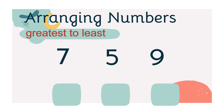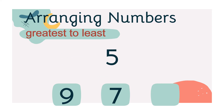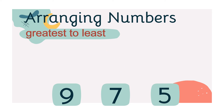Next, let's have numbers 7, 5, and 9. Which one is the greatest number? Good job! Number 9 is the greatest number. How about the next number? Very good! Number 7. And the least number? Great job! Number 5. So, we have 9, 7, and 5.